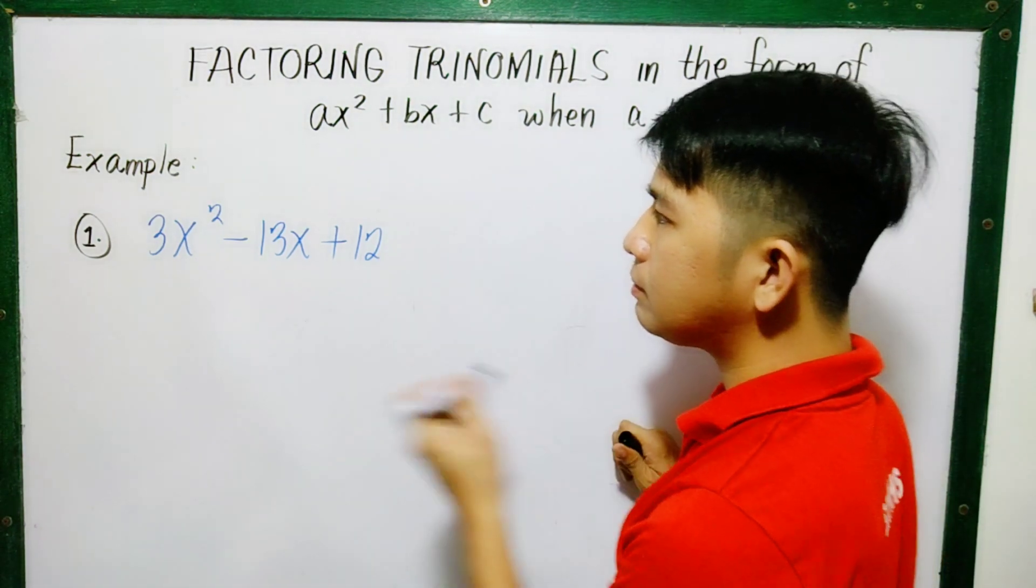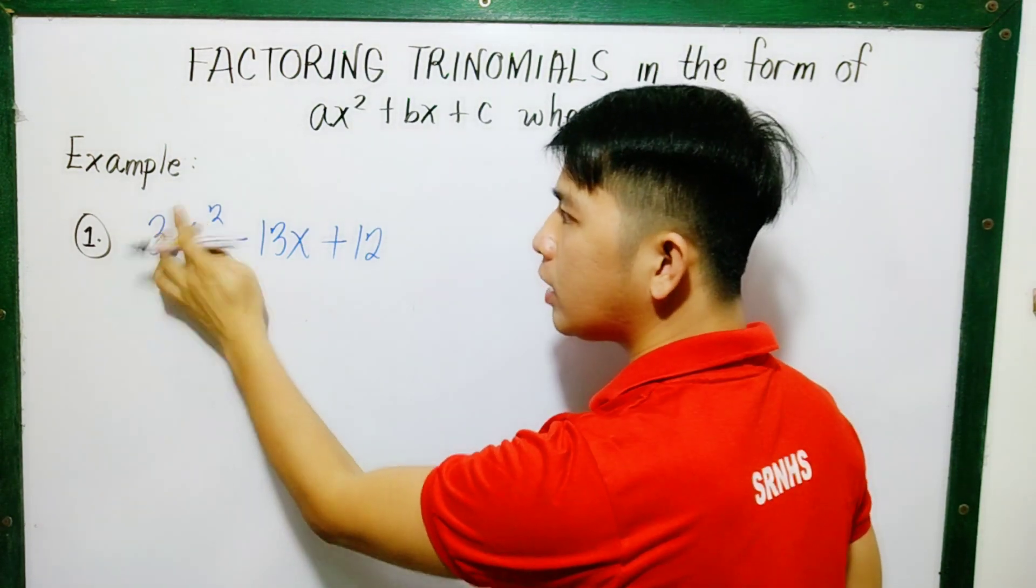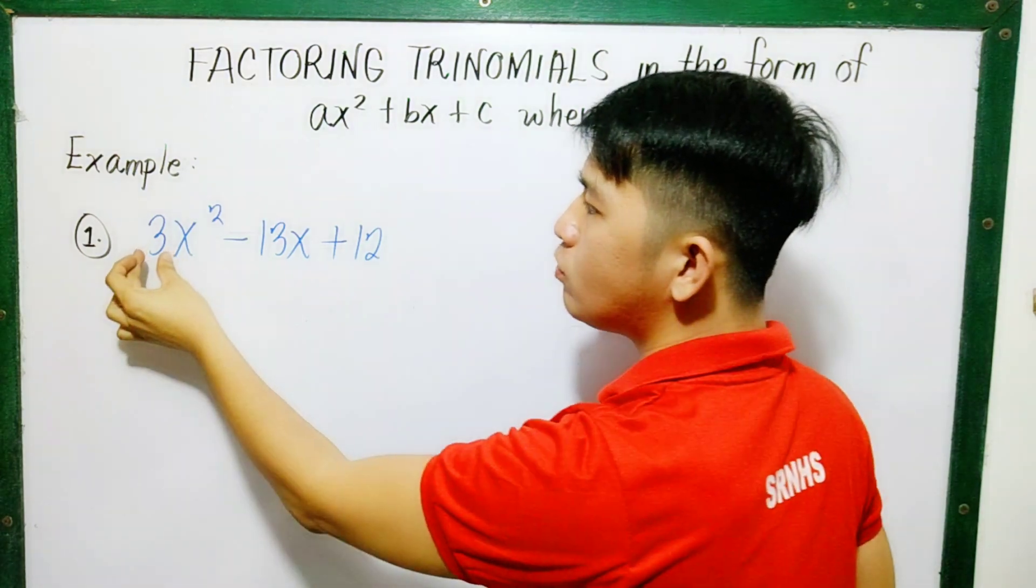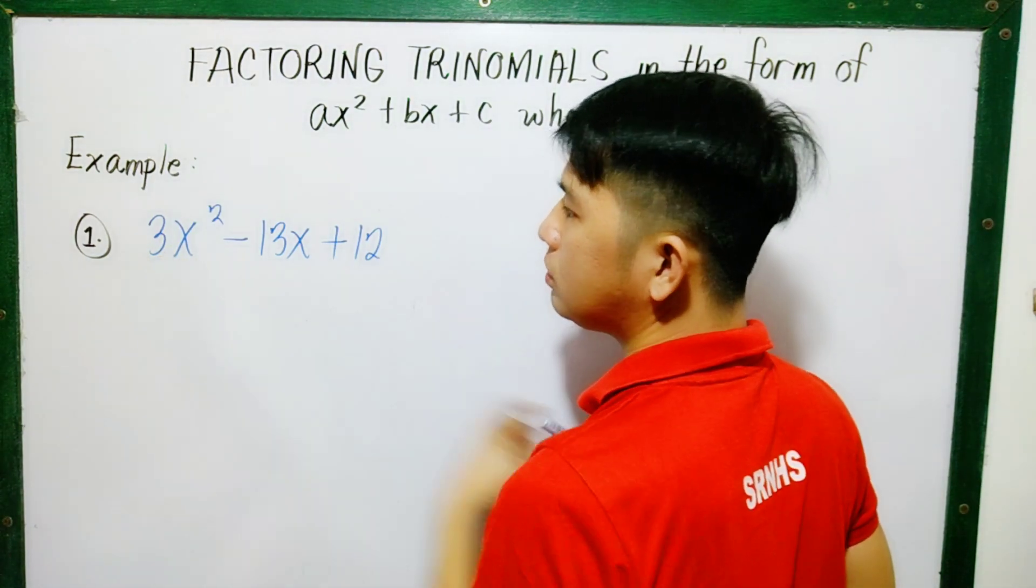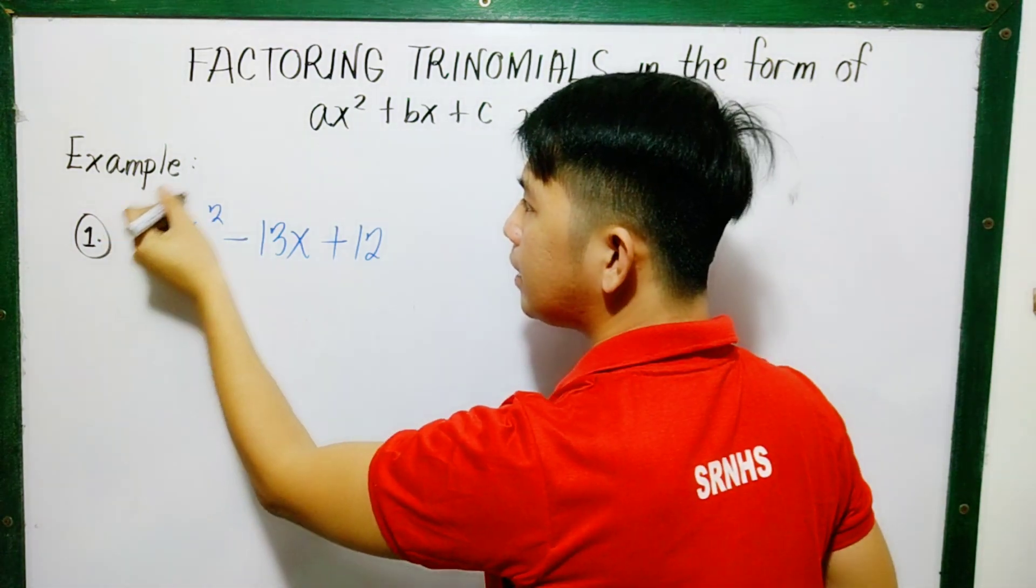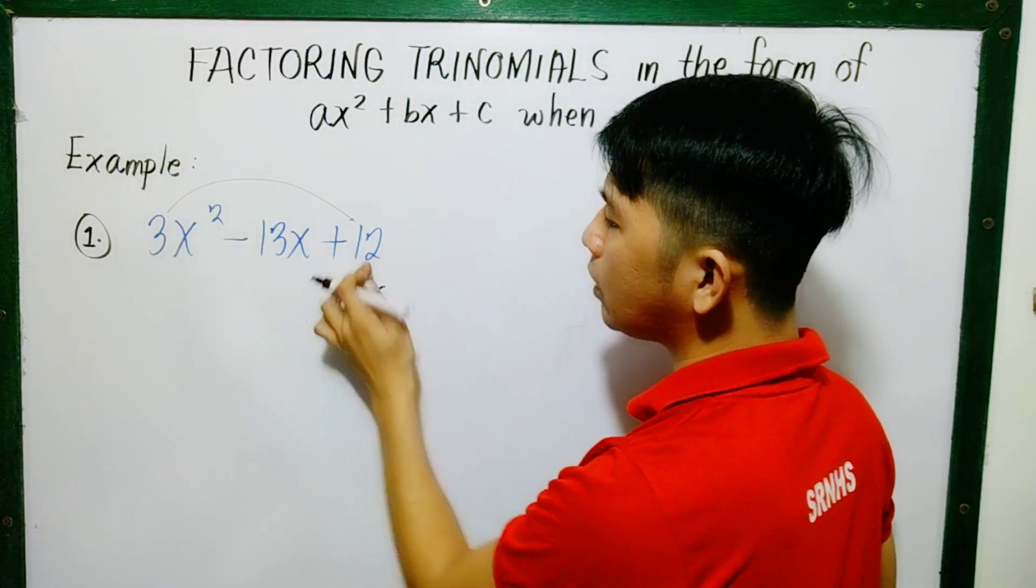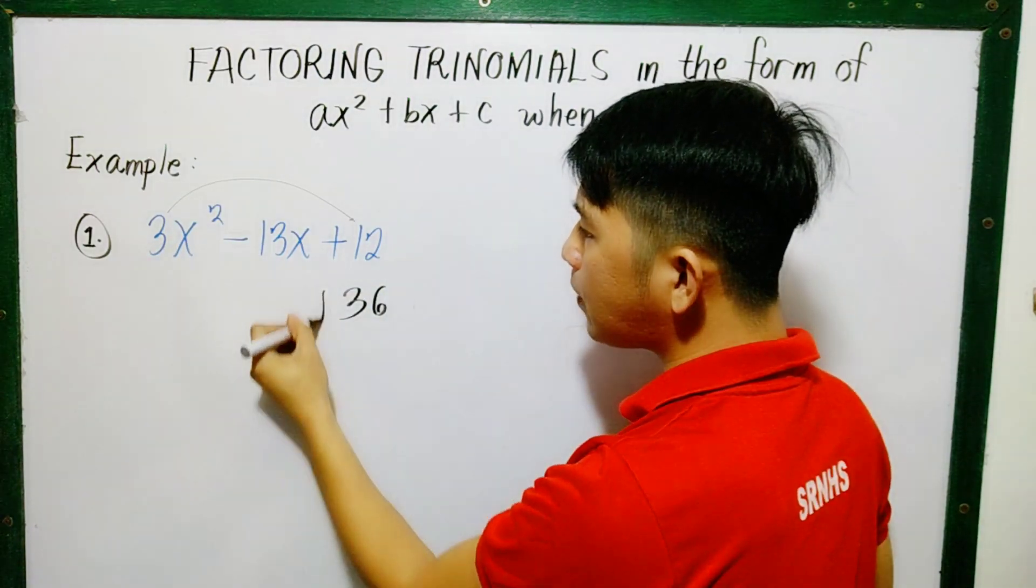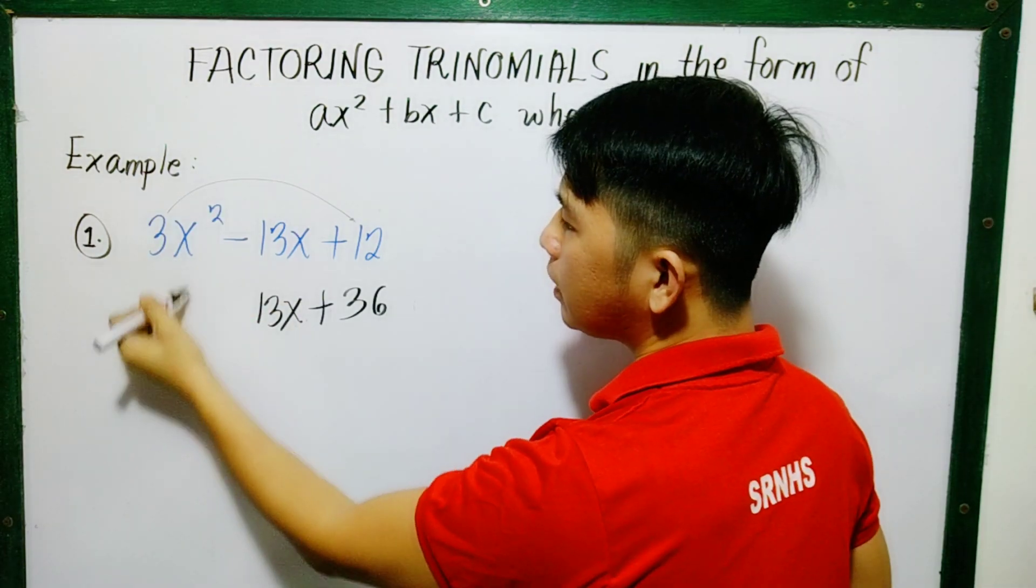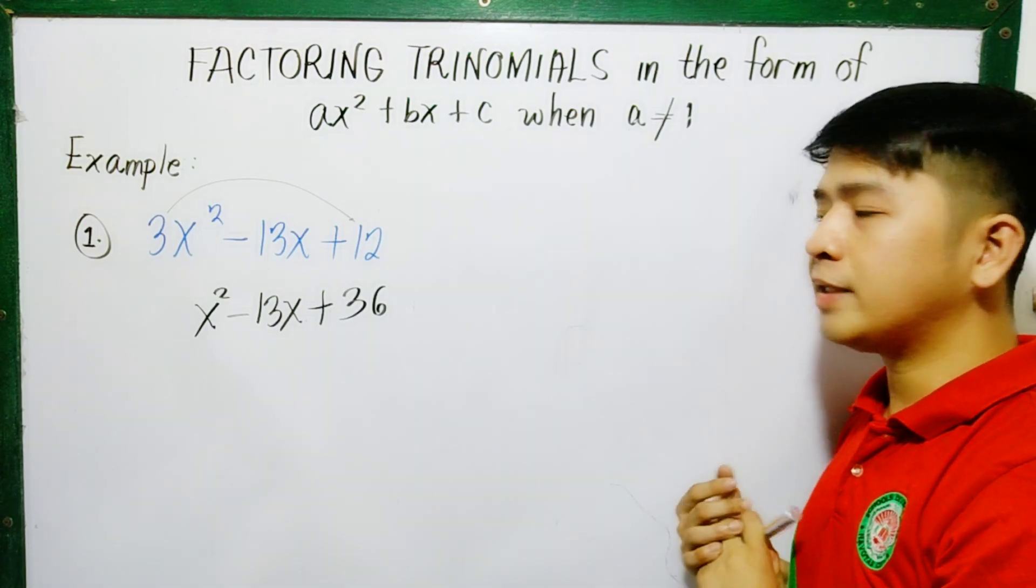Example: 3x squared minus 13x plus 12. So our a is 3, where b is negative 13 and c is 12. First thing we'll do is remove the 3. How do we remove it? Will we erase it? Of course not. What we'll do is multiply that 3 to the last term. So multiply that 3, and it becomes 36 because 3 times 12 is 36. Then copy what's left. This becomes just x squared.